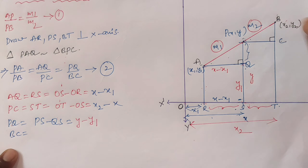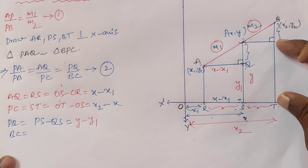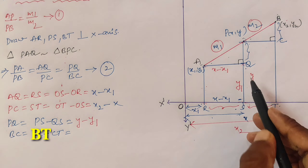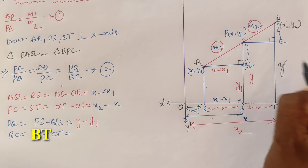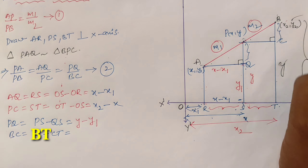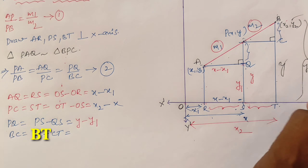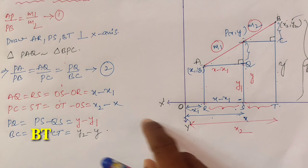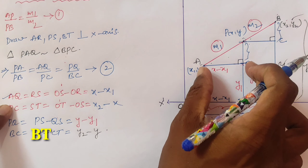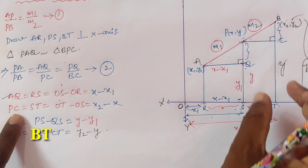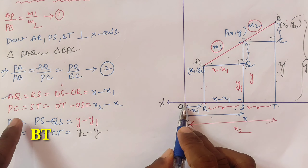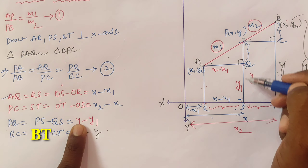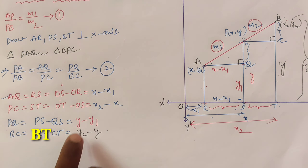Now we find BC. BC equals BT minus CT. BT corresponds to y2 on the y-axis, and CT equals y, so BC equals y2 minus y. To summarize: AQ = x minus x1, PC = x2 minus x, PQ = y minus y1, and BC = y2 minus y. We now substitute all these values into equation number two.